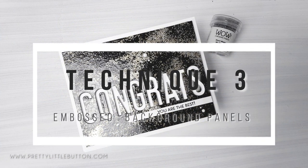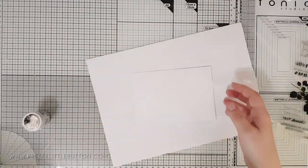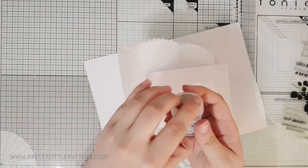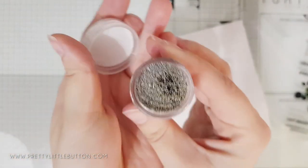Technique three uses the color blend embossing powders to create background panels. So this technique really shows off the stunning effect of the powders as they melt.